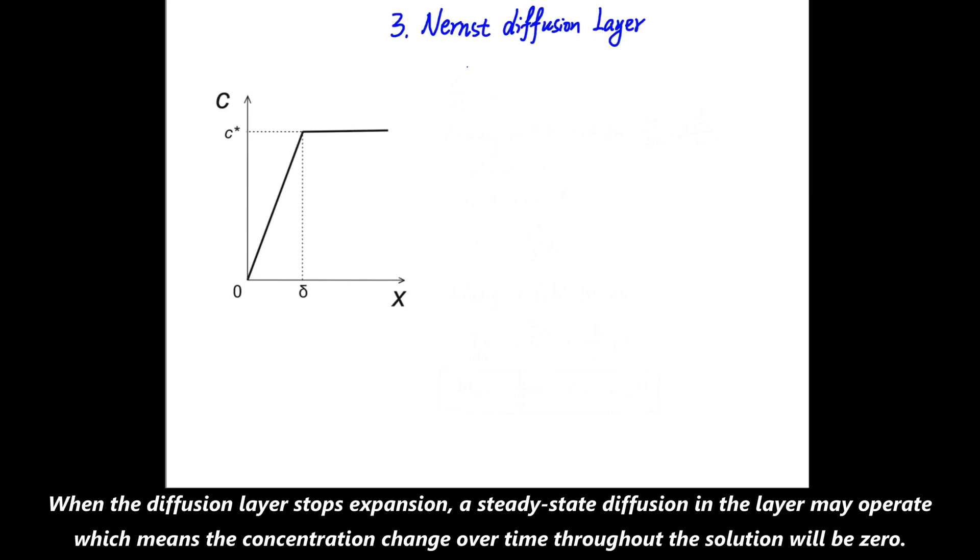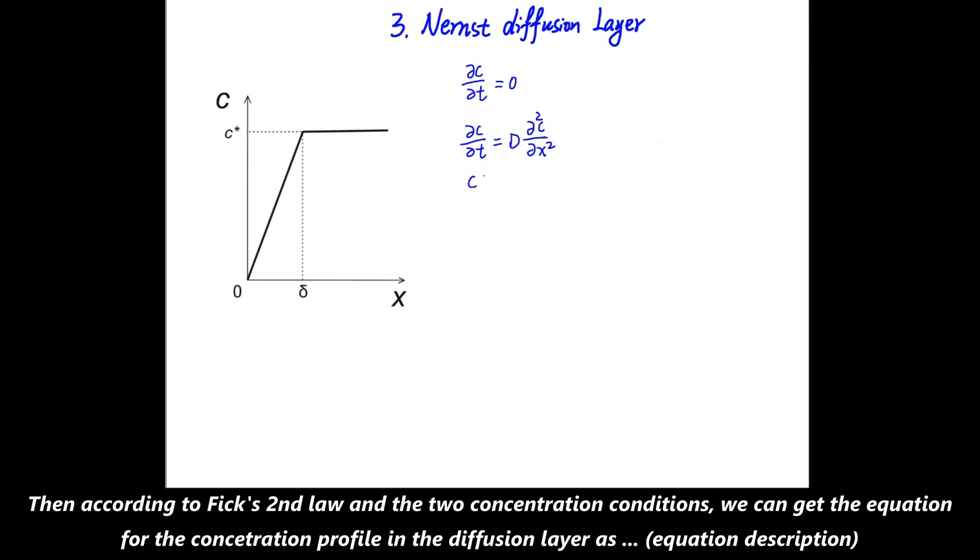And the concept of Nernst diffusion layer is very useful as we will be showing in the following. When the diffusion layer stops expansion, a steady-state diffusion in the layer may operate, which means the concentration change over time throughout the solution will be zero. Then, according to Fick's second law and the two concentration conditions, we can get the equation for the concentration profile in the diffusion layer as C = (C*/δ)·x, where 0 < x < δ.